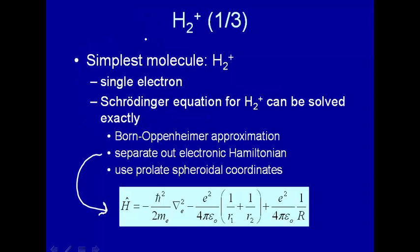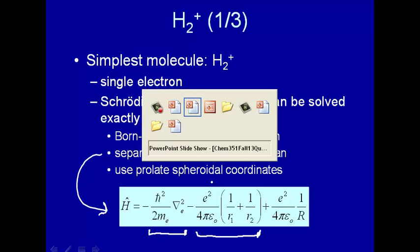So we just have one kinetic energy term in the Hamiltonian, here it is, this is the kinetic energy term for that one electron moving around. Now we have two terms dealing with the electron nuclear attraction.